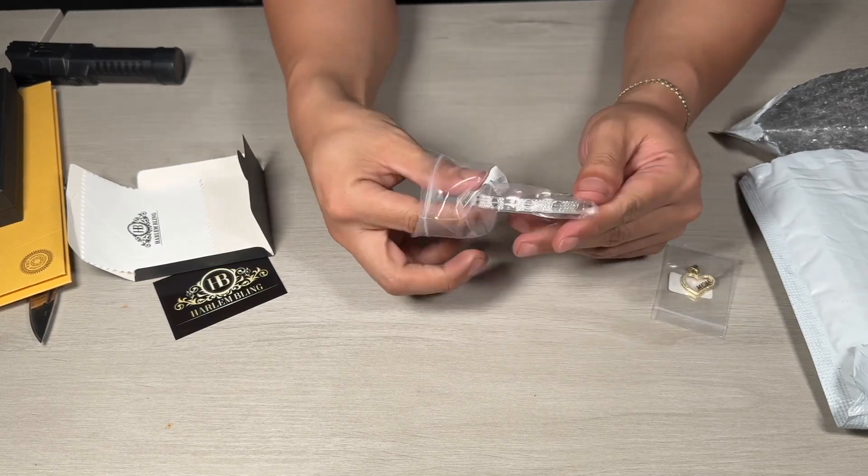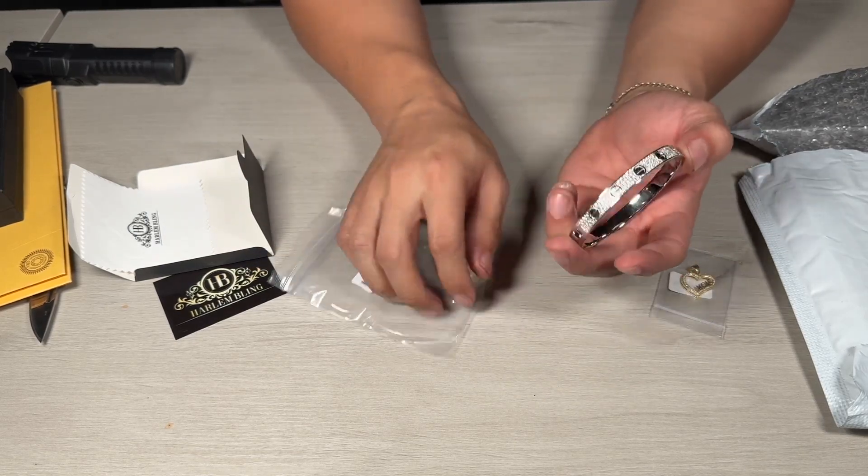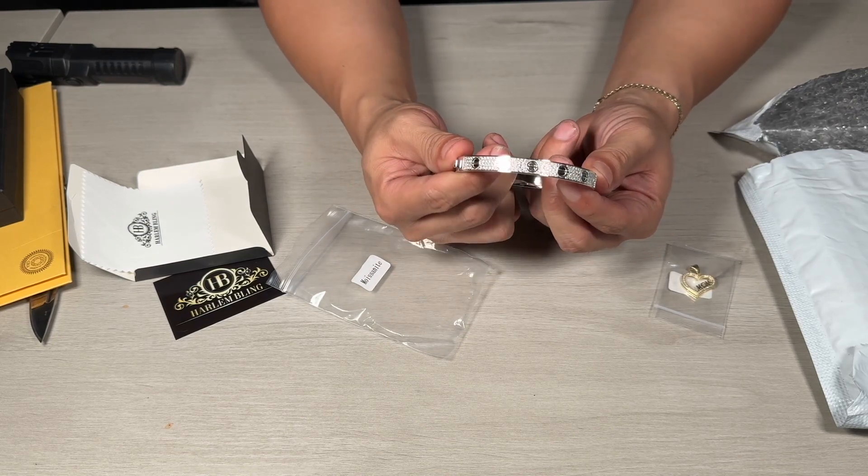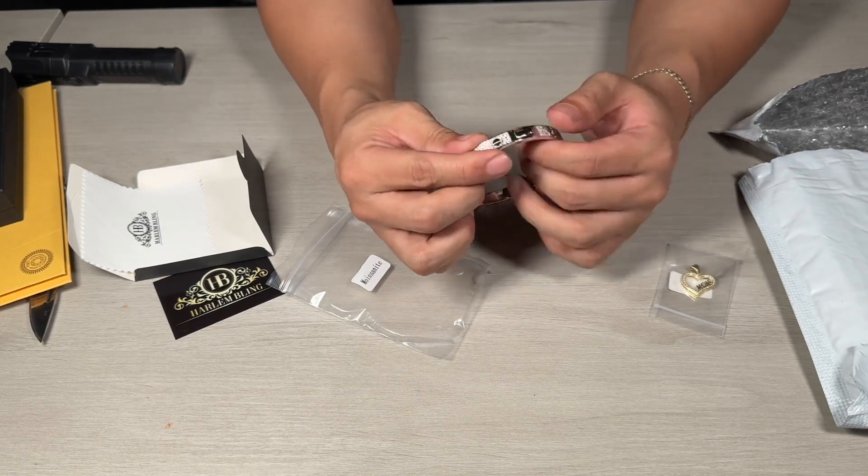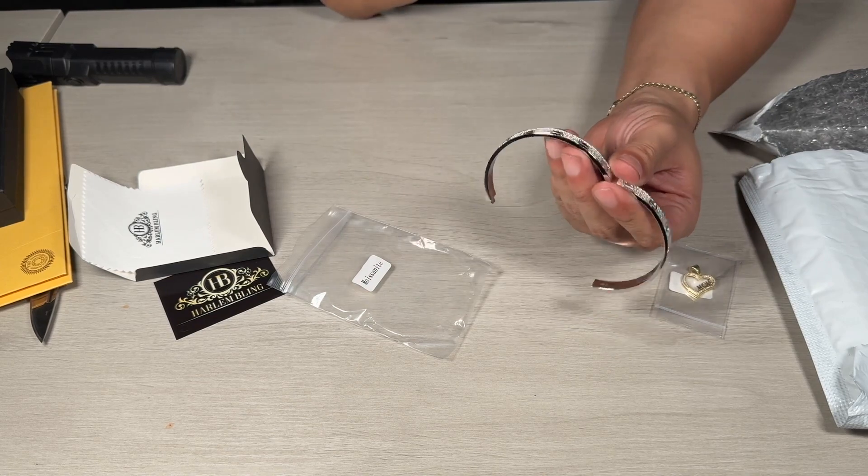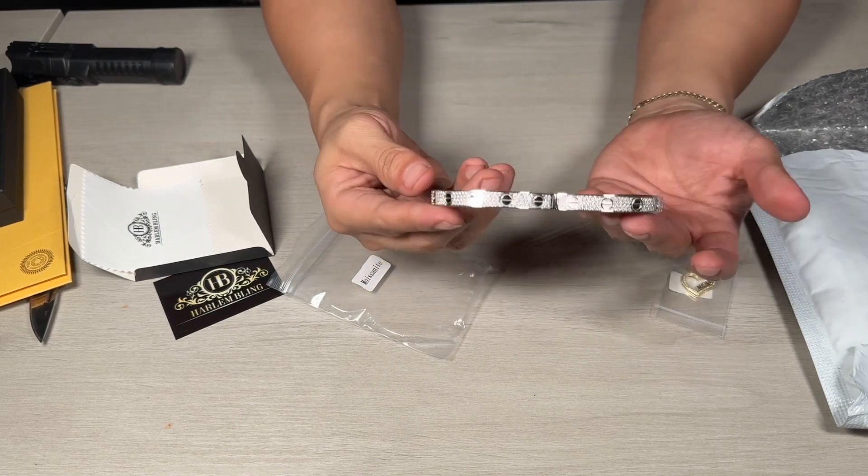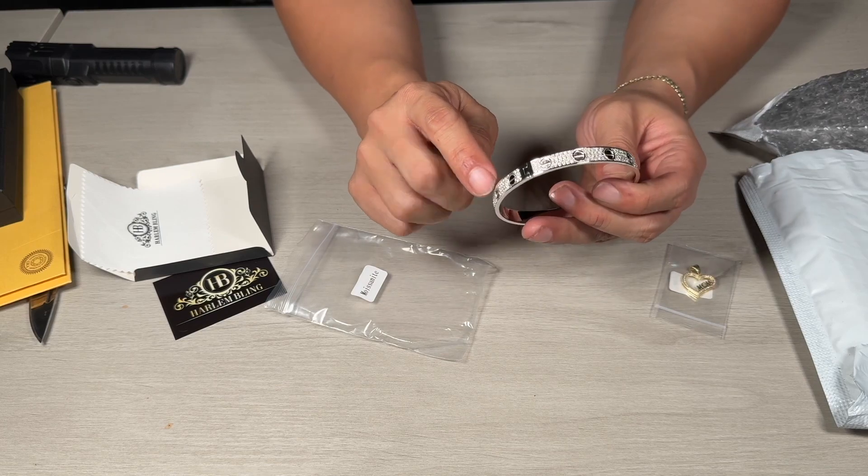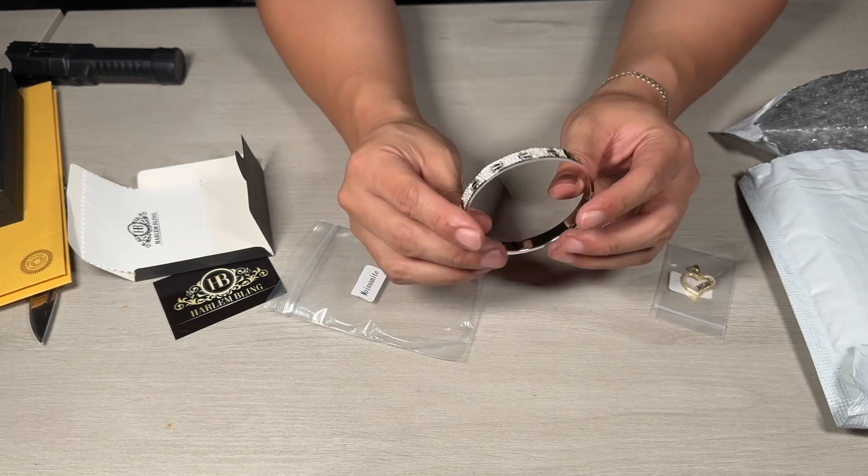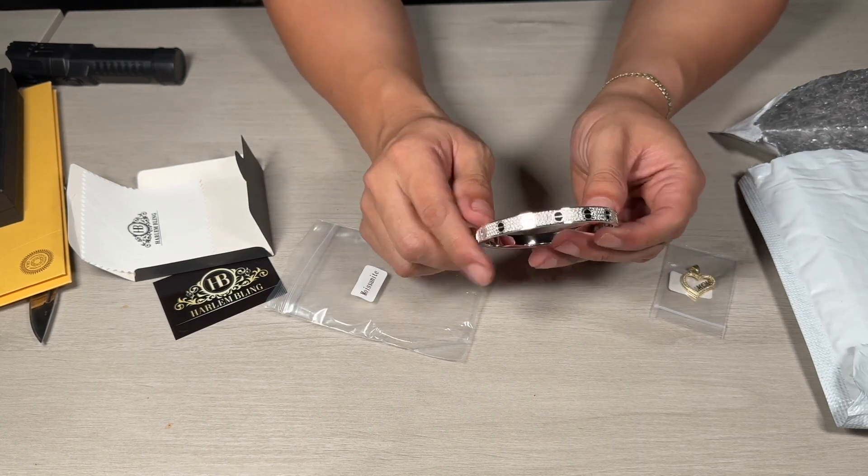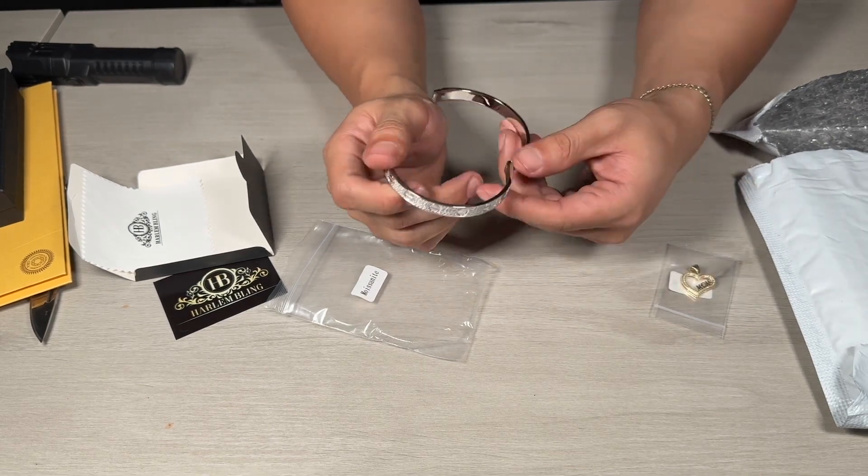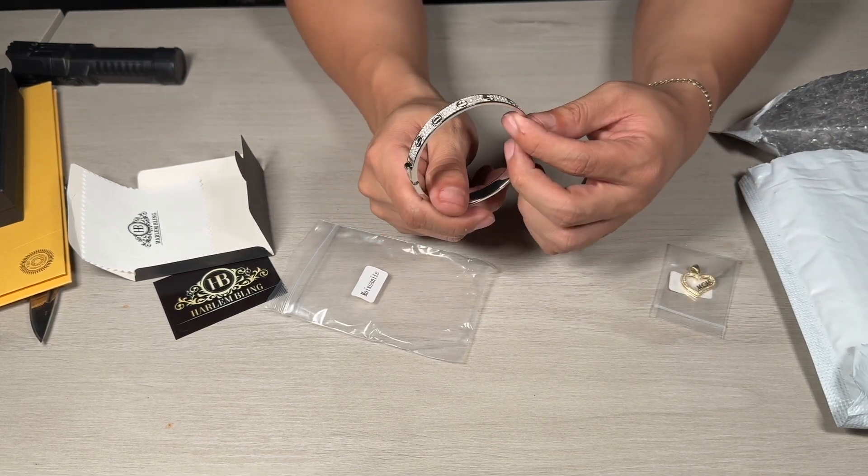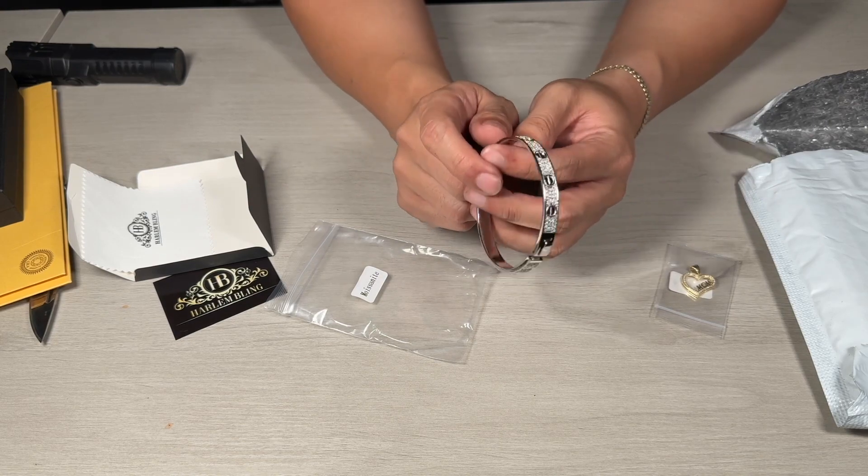It is the Cartier inspired bangle. Let me open it. So it is the fully iced one. They have one which just has the moissanite diamonds here every other one, but with that one the backing is just plain silver, there's nothing on that one. So I decided to opt for this one.